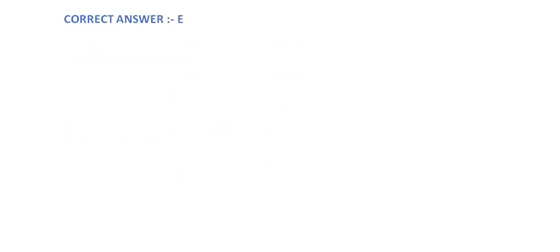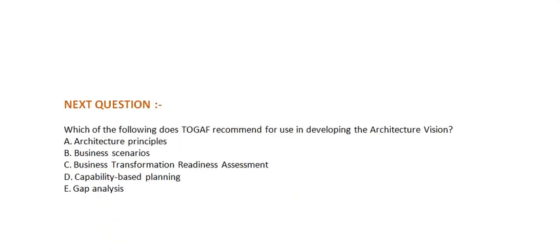Next question: which one of the following does TOGAF recommend for use in developing the architecture vision? Option A, architecture principles. Option B, business scenarios. Option C, business transformation readiness assessment. Option D, capability-based planning. And option E, gap analysis.